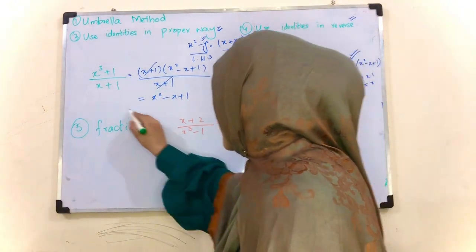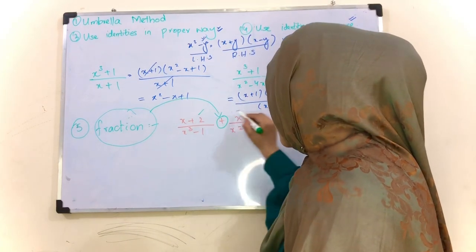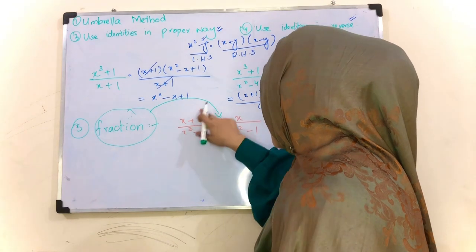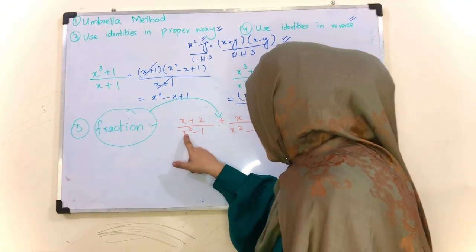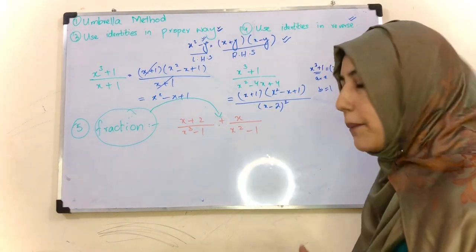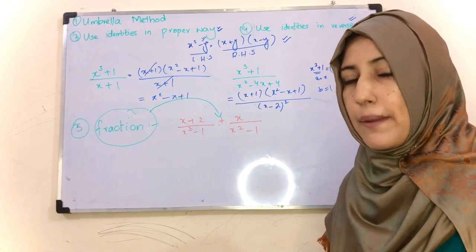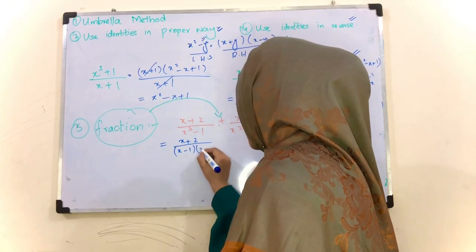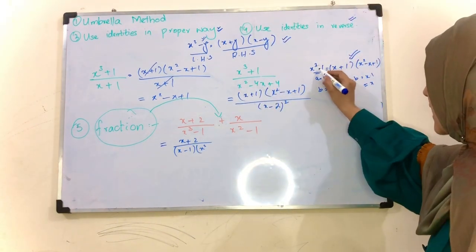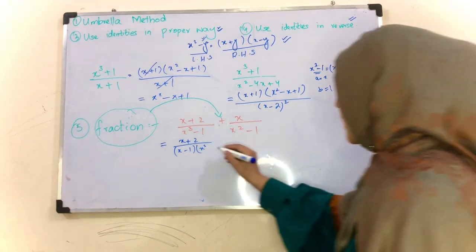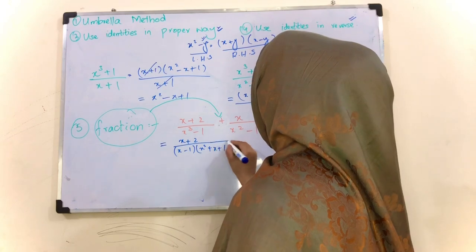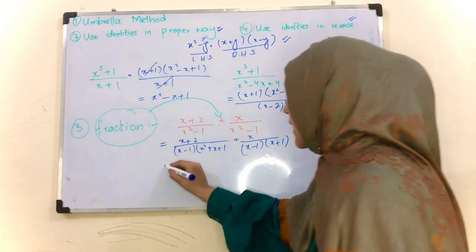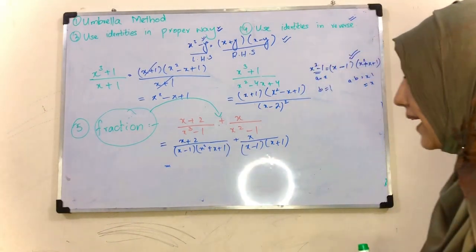Fraction kab hum apply karte hain - fraction ka use kab karte hain: jab aapke paas fraction ki term mein plus ya minus koi bhi sign ho. Ab hum is example ko solve karte hain. Solve karne se pehle, xq minus 1 aur x² minus 1 hai to yahan pe hamare paas use of identity in proper way wala method hum ne use karna hai. To yahan kya paylenge: x+2 as it is, x−1, x², minus ke saath.